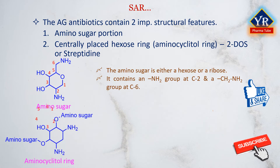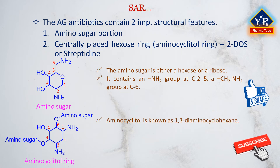The centrally placed hexose ring, also known as the aminocyclitol ring, is the distinguishing structural component of all aminoglycosides. Aminocyclitols are carbocycles or cyclohexane derivatives that have amine functionality at C1 and C3 and hydroxyl groups at C4, C5, and C6. The aminocyclitol ring is chemically known as 1,3-diaminocyclohexane. It does not contain a hydroxyl group at C2, and thus is chemically known as 2-deoxystreptamine.